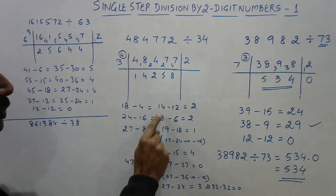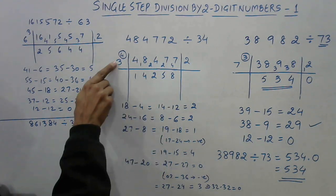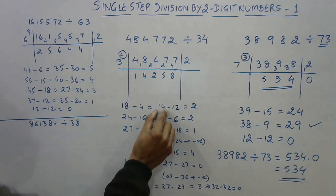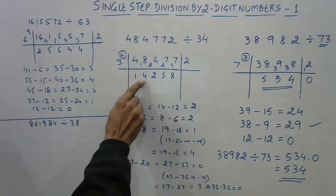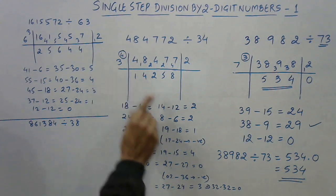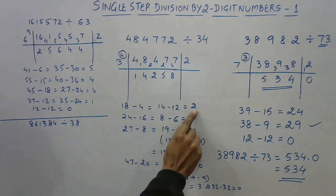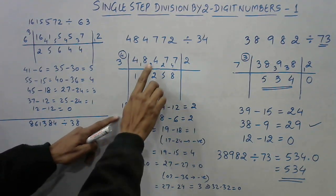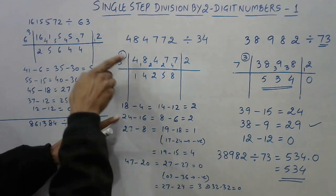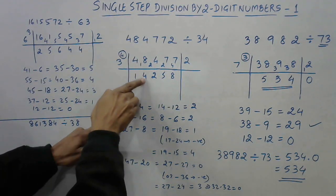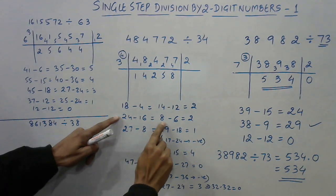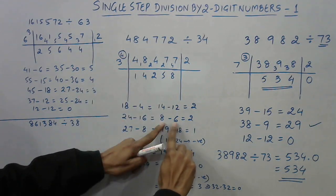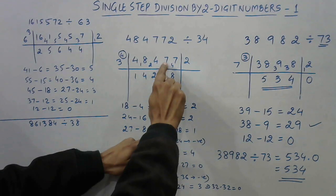Now I want to get close to 14. Three fours are 12, so the quotient digit is 4 and the remainder 14 minus 12 is 2, written here. This becomes 24, but 24 is not the new dividend yet — we subtract 4 times the previous quotient 4, which is 16. So 24 minus 16 is 8. I want to get close to 8: 3 times 2 is 6, remainder is 2, which comes here.